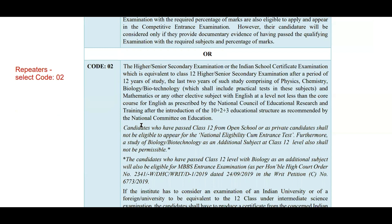Code 2 is mainly for NEET repeaters. Anyone who has cleared the 12th exam in previous years — who already has a 12th scorecard, maybe from 2021, 2020, or 2019 — should select code 2. If you have already completed your 12th exam and have taken a break to prepare for NEET, you should select code 02.